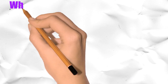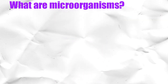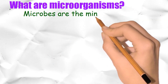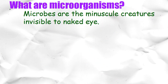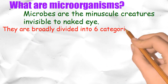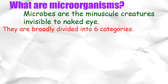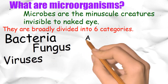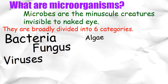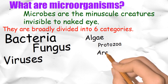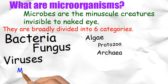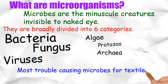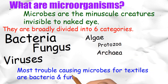What are microorganisms? Microbes are minuscule creatures invisible to the naked eye. They are broadly divided into six categories: bacteria, fungus, viruses, algae, protozoa, and archaea. The most trouble-causing microbes for textiles are bacteria and fungi.